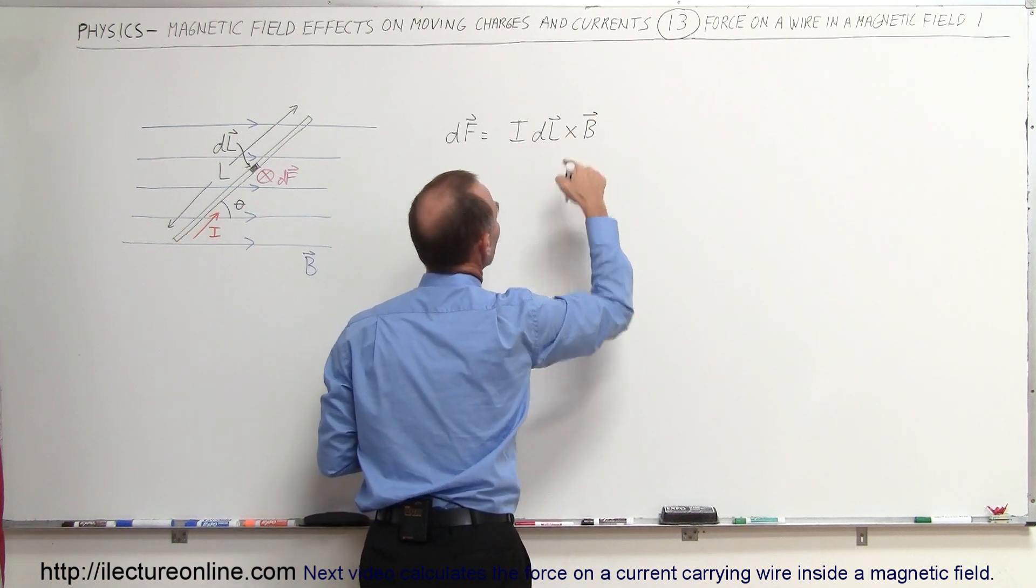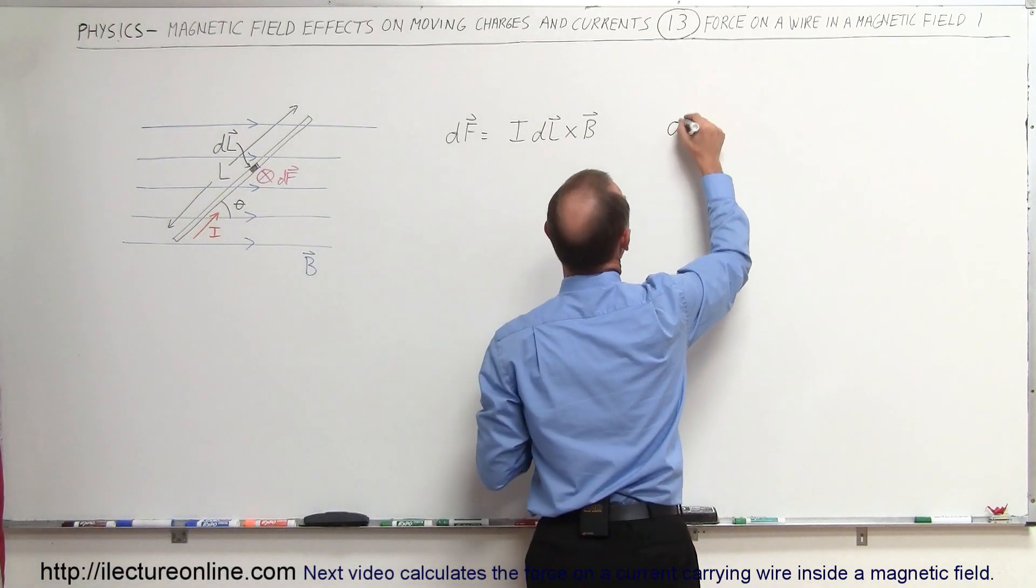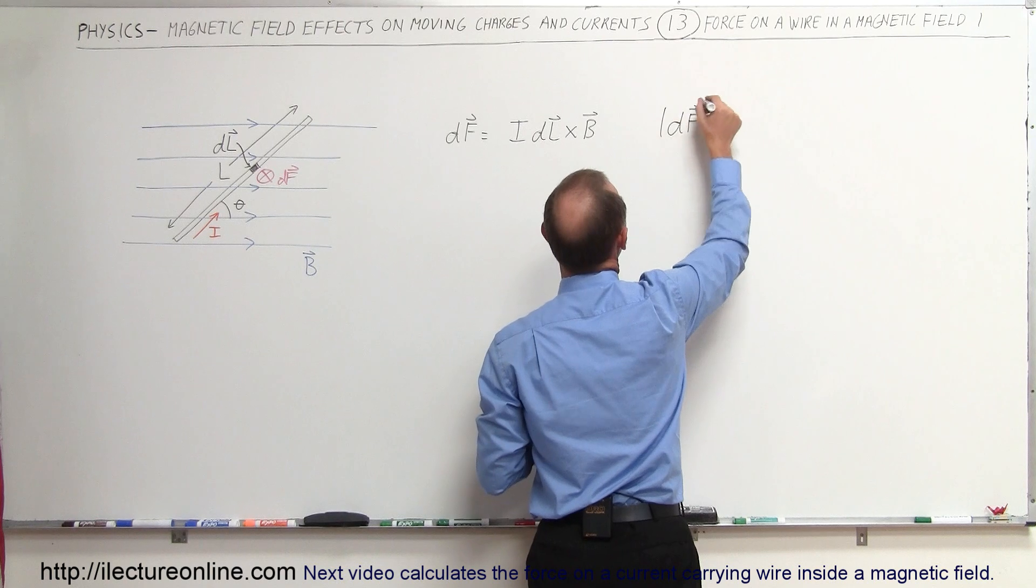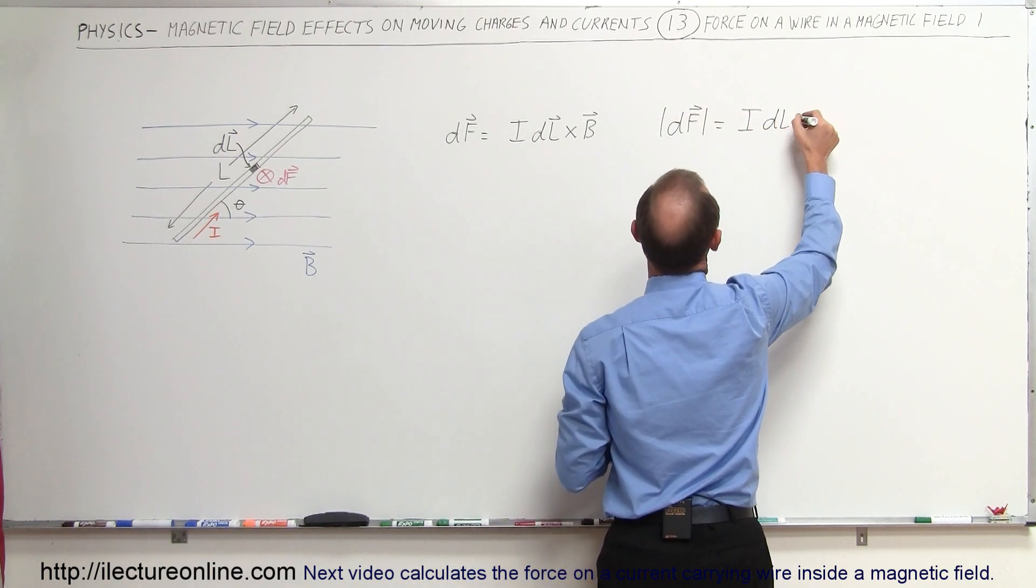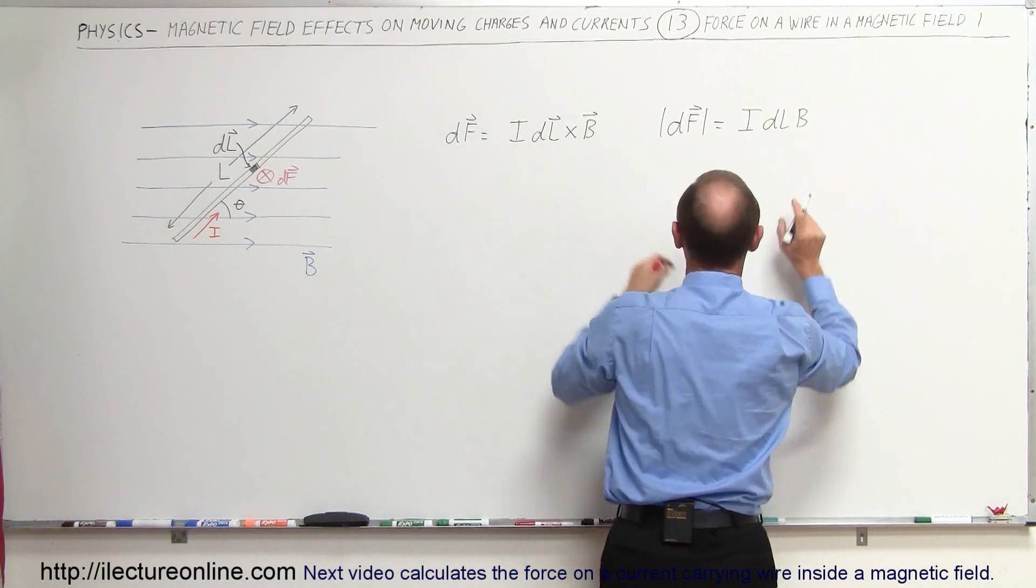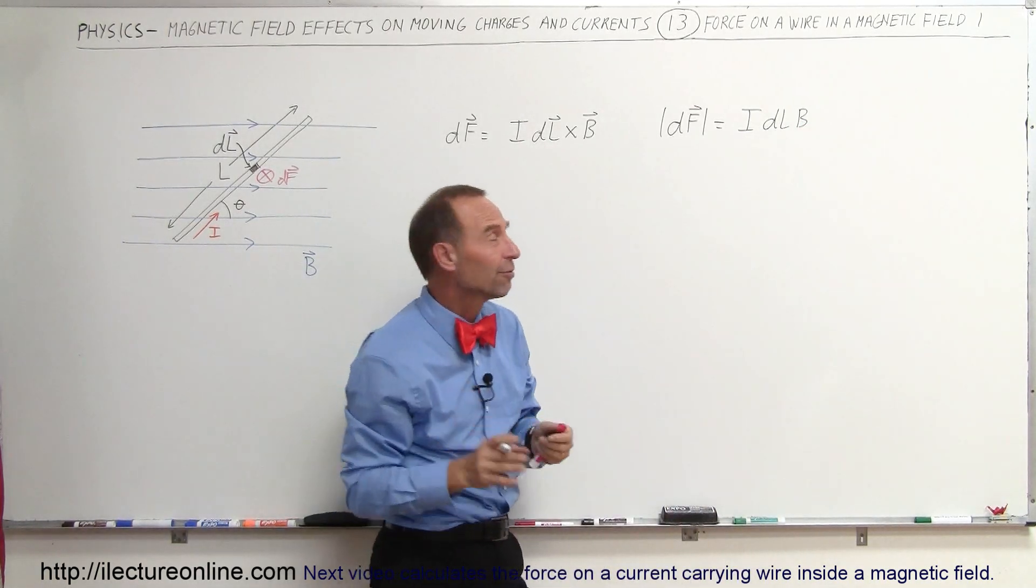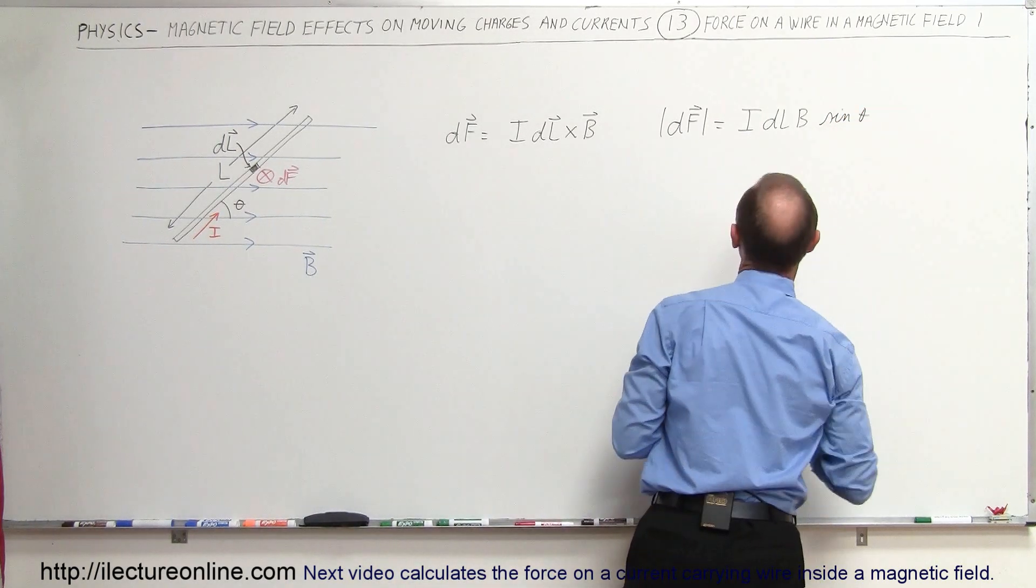And of course, the magnitude of df is going to be equal to I times dl times B times the angle between them—it would be the sine of the angle because that's the result of the cross product. We find the sine of the angle between them, sine of theta.